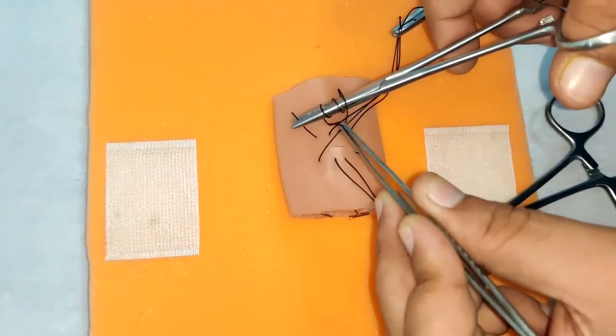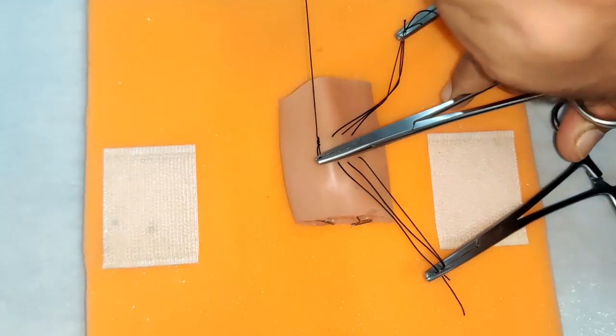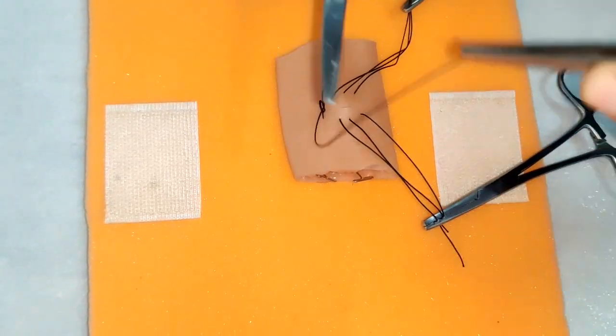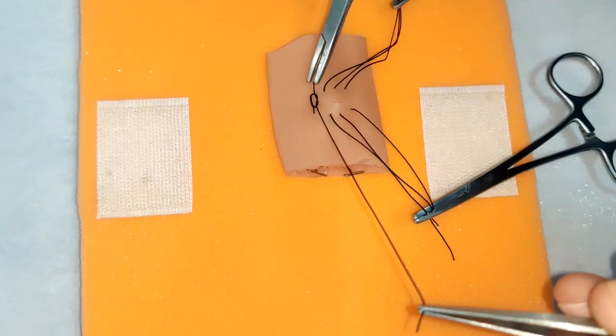We will start by suturing the edges and secure them. We will do a primary instrument tie. Once we are done with the suture, we will cut it.